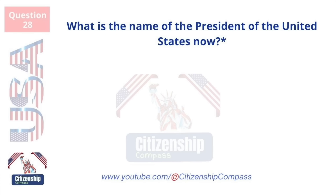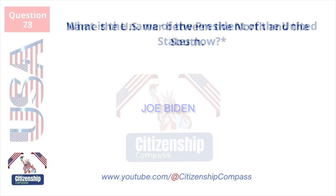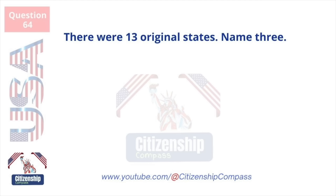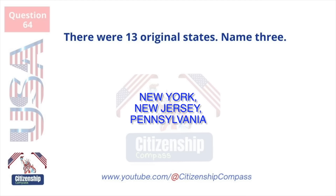What is the name of the president of the United States now? Joe Biden. Name the U.S. war between the North and the South. The Civil War. There were 13 original states. Name three. New York, New Jersey, and Pennsylvania.